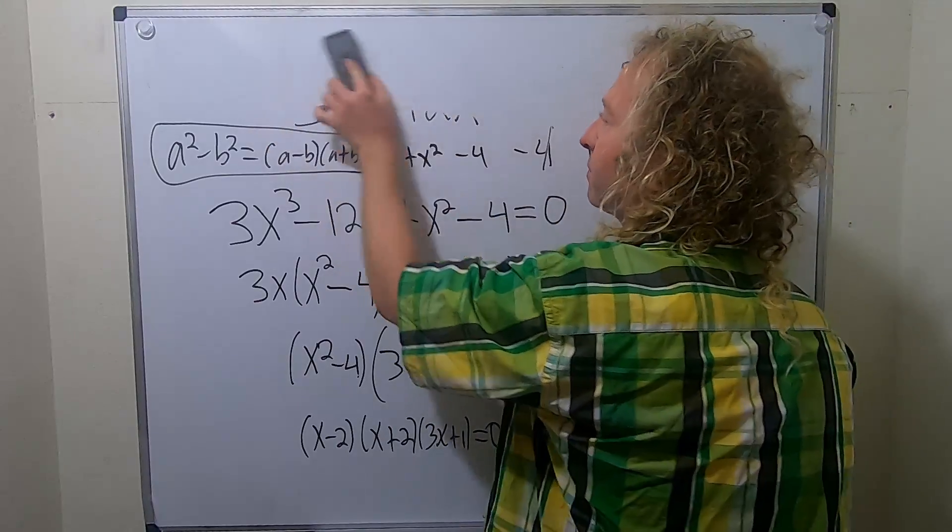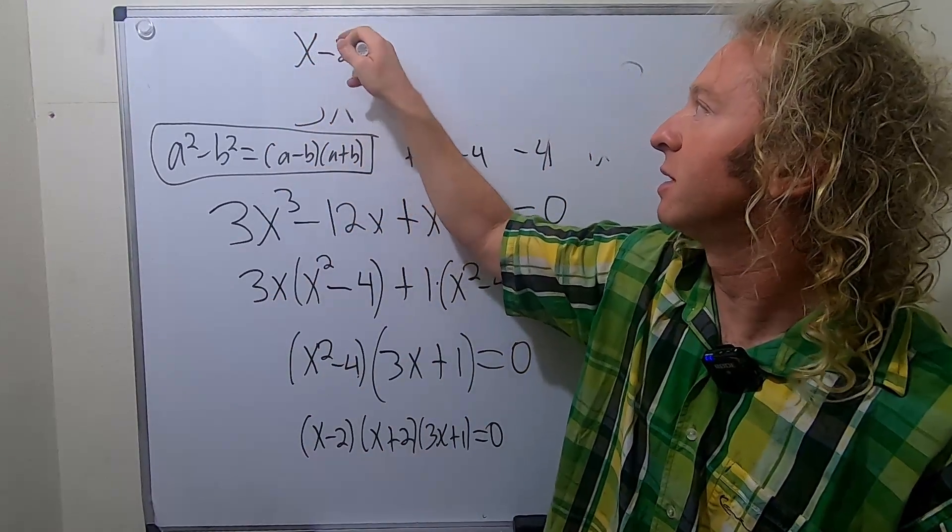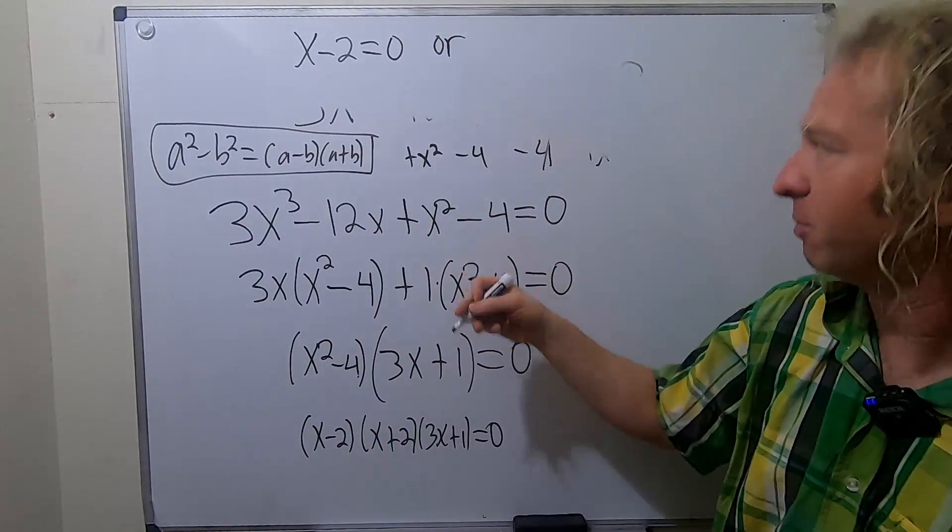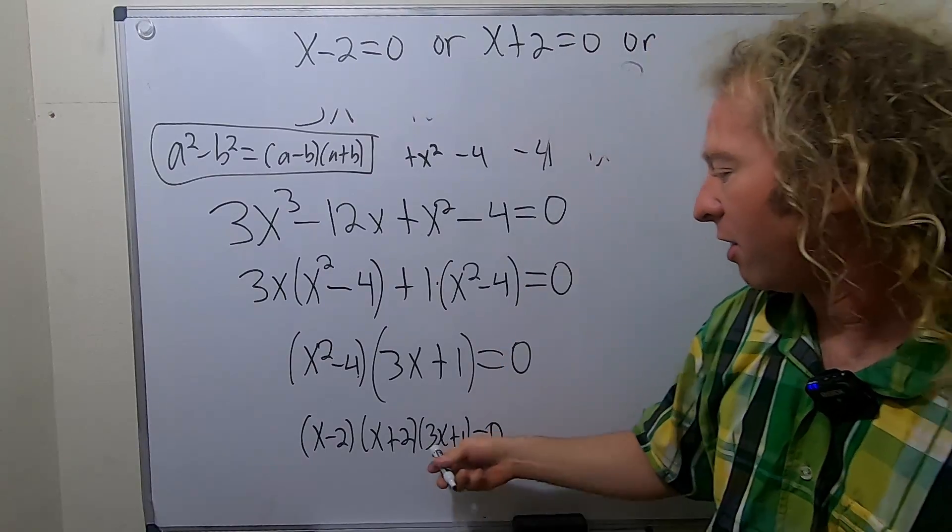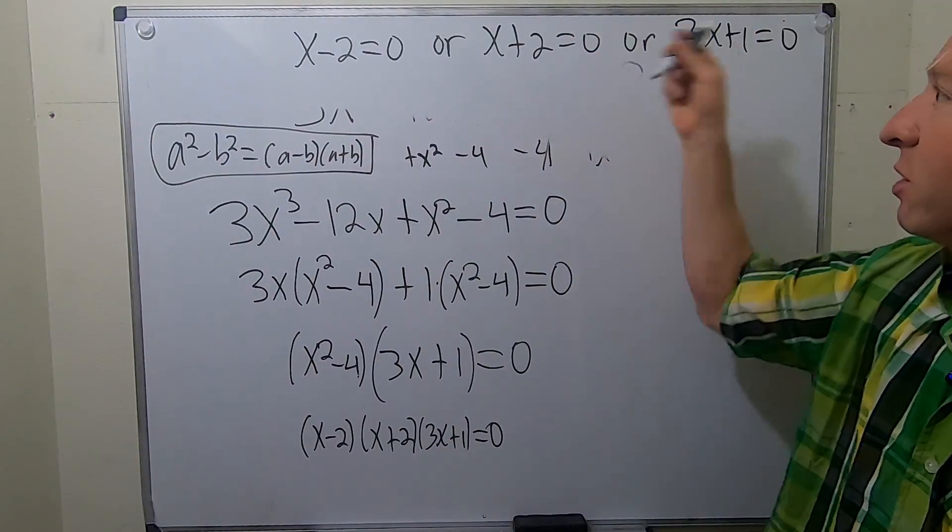So we have, I'm going to erase this up here. So we have x minus 2 equals 0. Again, you can skip this step. Or, you're supposed to put an or, but you don't have to put it, but I'll put it. x plus 2 equals 0. Or, 3x plus 1 equals 0. So we have these three equations.